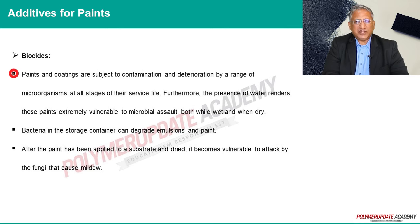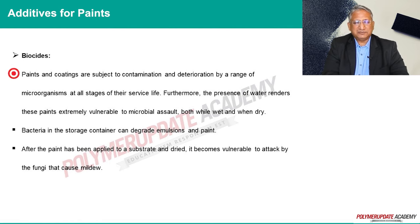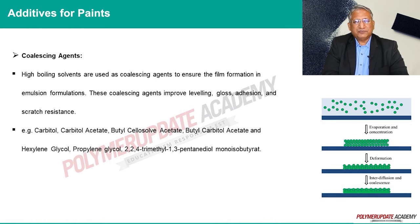Biocides: at every stage of their service lives, paints and coatings are susceptible to contamination and degradation by a variety of microorganisms. The presence of water makes these paints very susceptible to microbial attack, both in wet state and dry film state. Bacteria can spoil emulsion paint in the storage container. Coalescing agents: high boiling solvents are used as coalescing agents to ensure film forming in emulsion formulations.